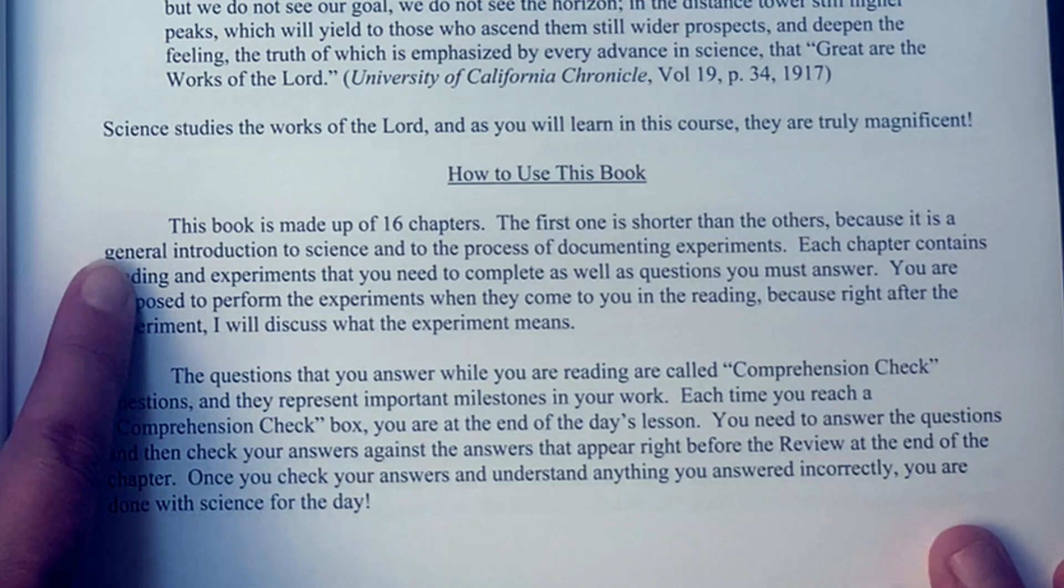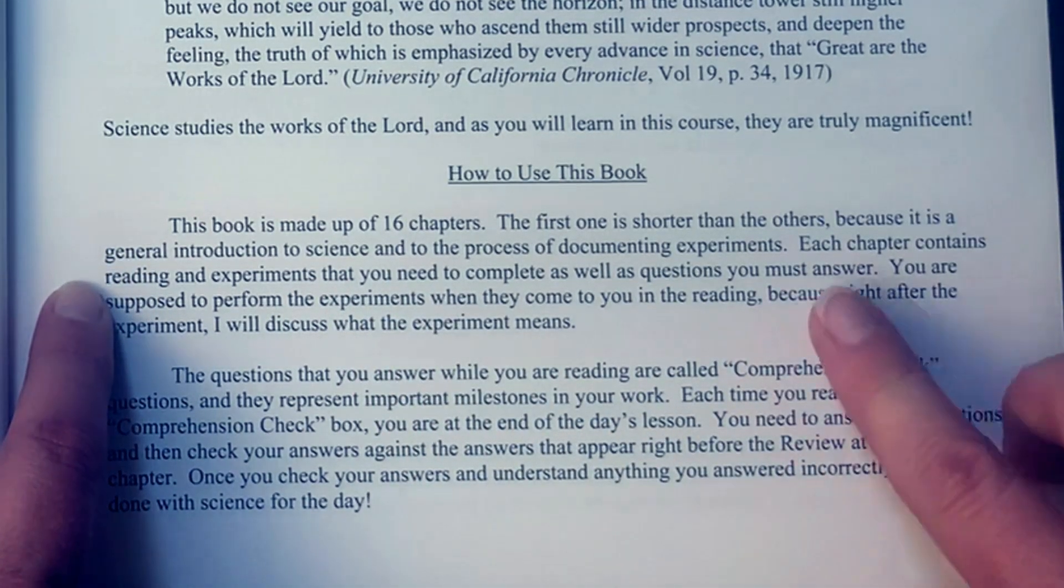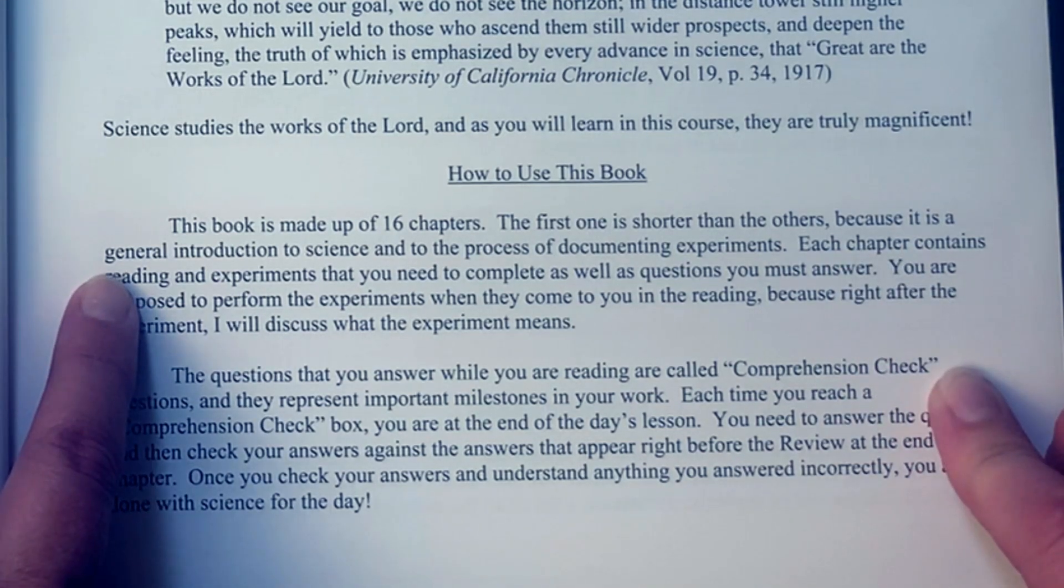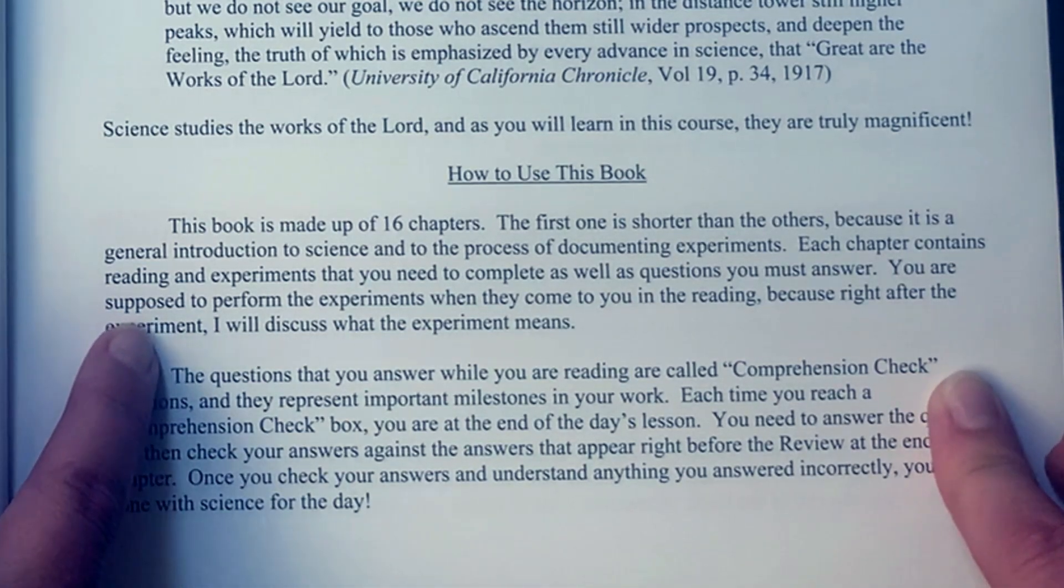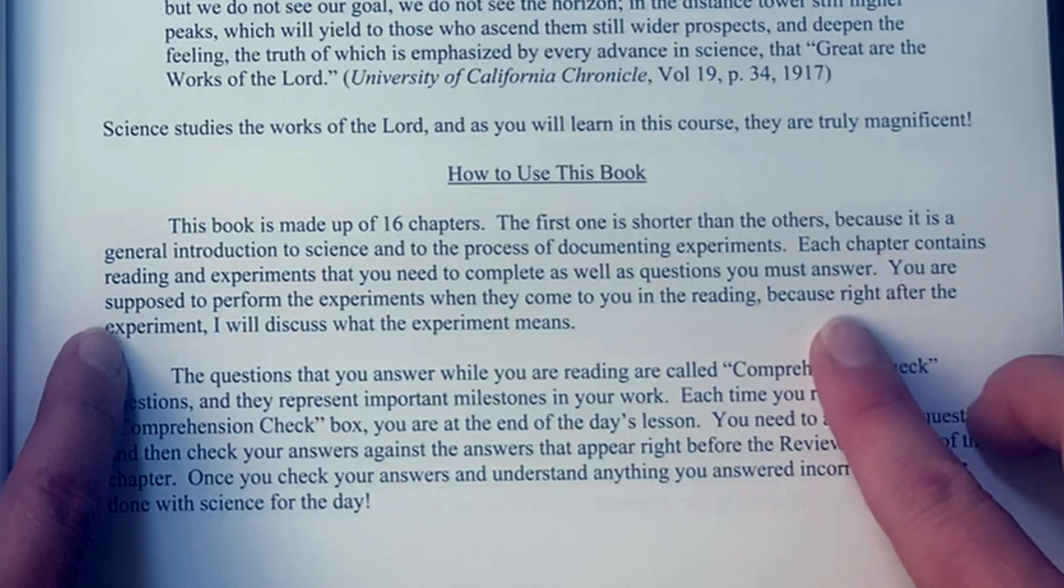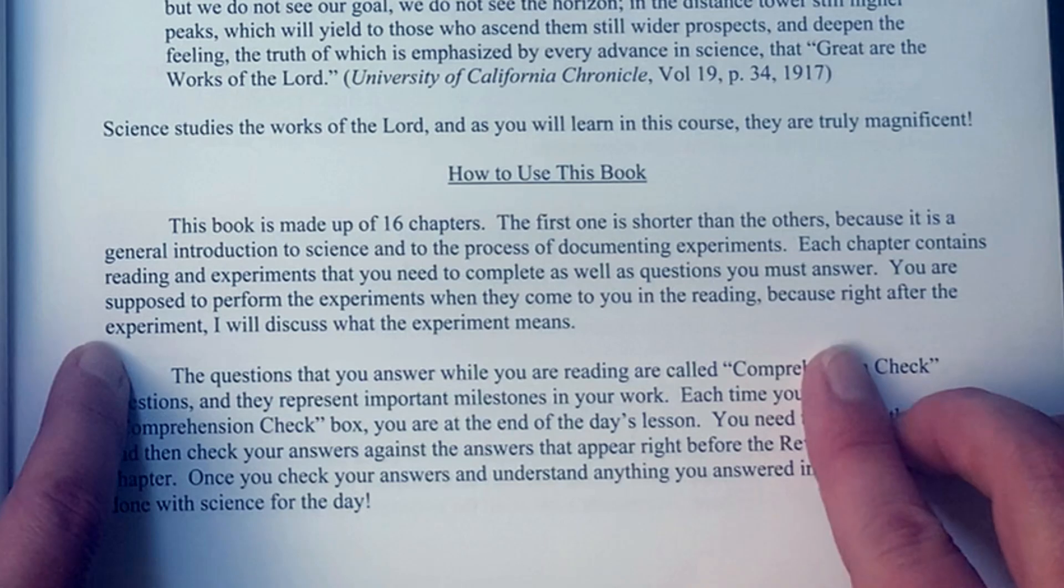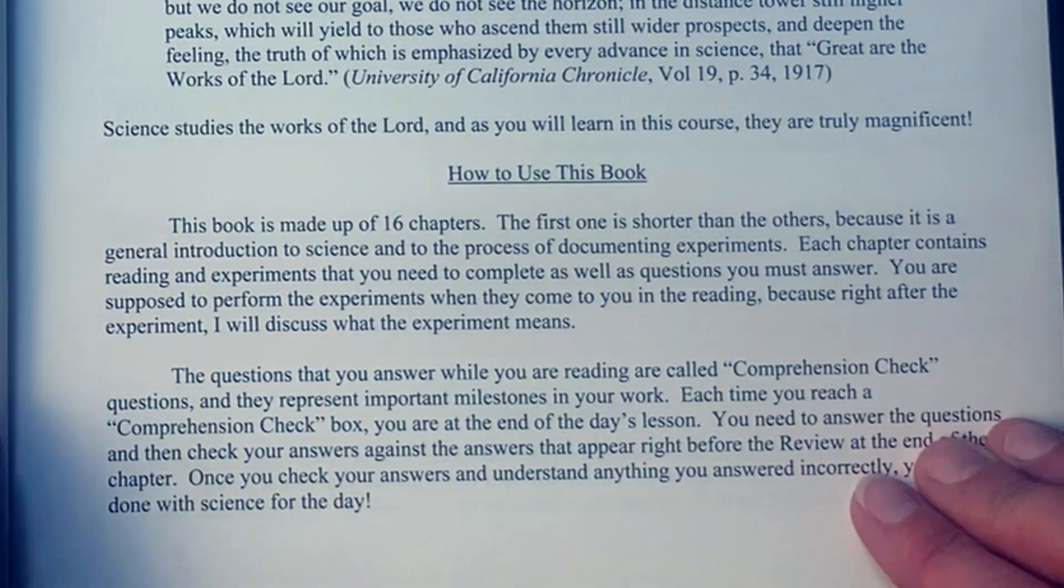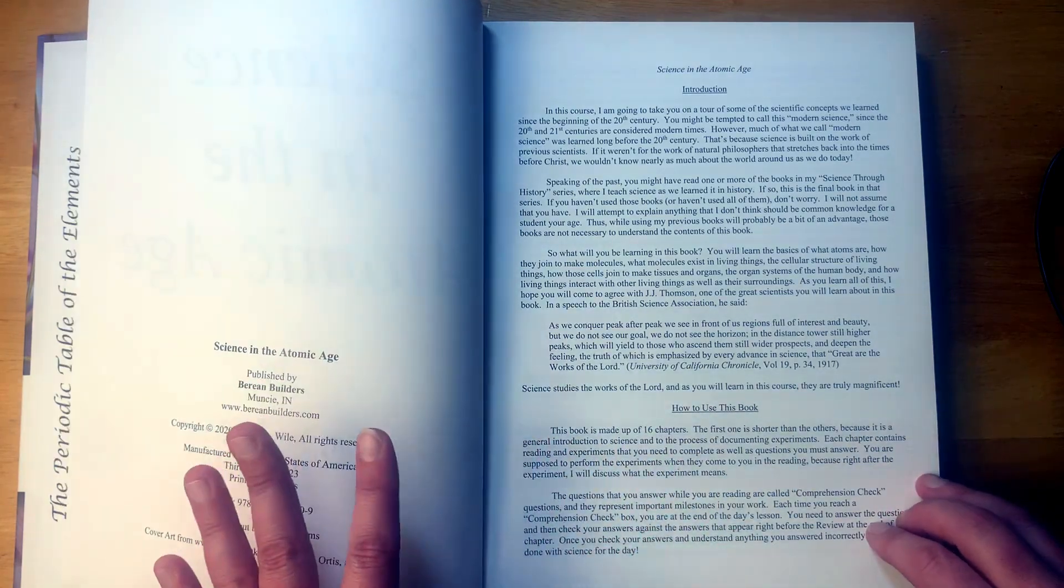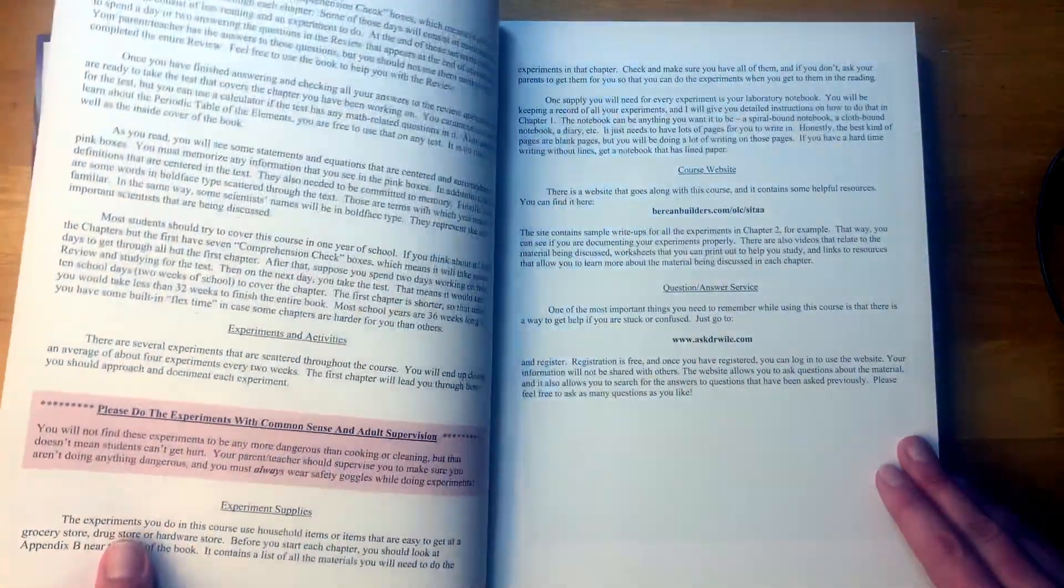Okay, so how to use this book. It says this book is made up of 16 chapters. The first one is shorter than the others because it is a general introduction to science and the process of documenting experiments. Each chapter contains reading and experiments that you need to complete as well as questions you must answer. You're supposed to perform the experiments when they come to you in the reading because right after the experiment I will discuss what the experiment means. So this is very much a mix of reading and experiments.